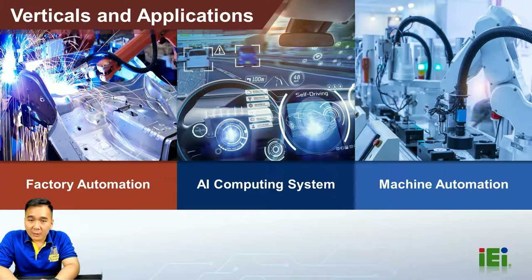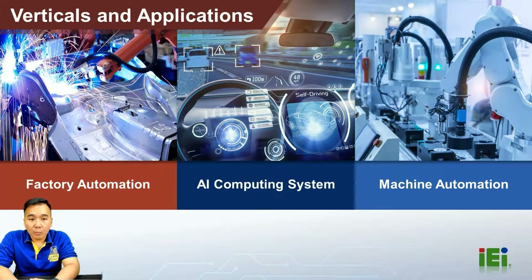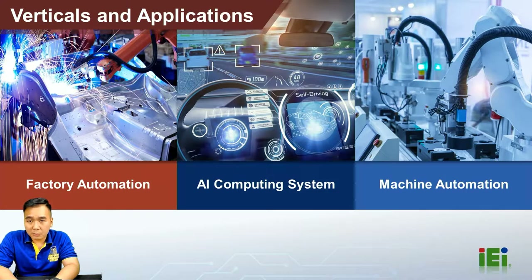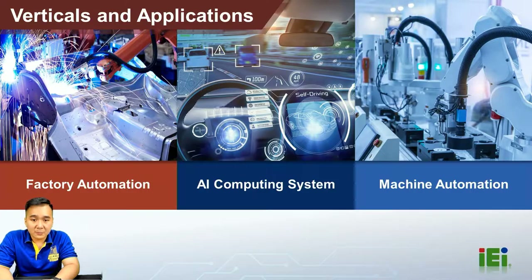For vertical applications, the REC 500 AI and PEC 400 AI can be used in factory automation AI computing systems and machine automation. Both systems are very multi-functional and can be used in common infrastructure space systems.